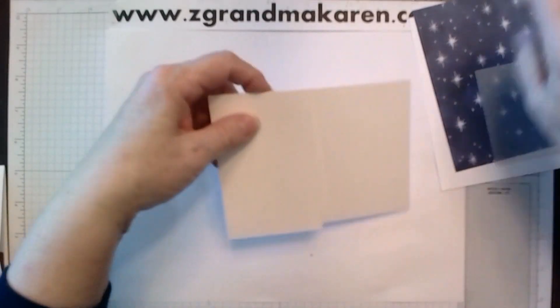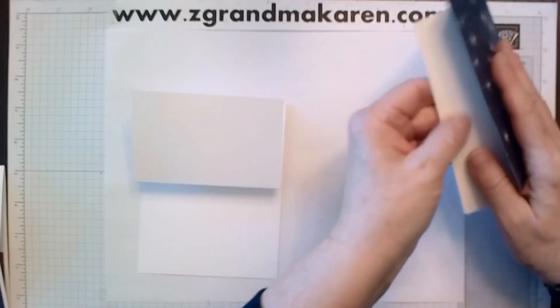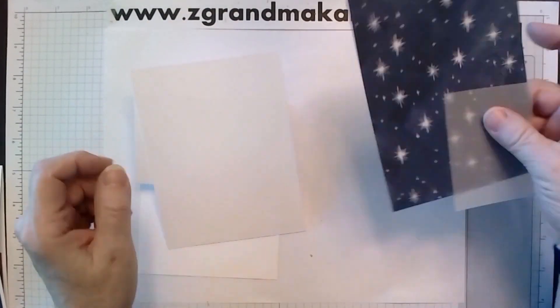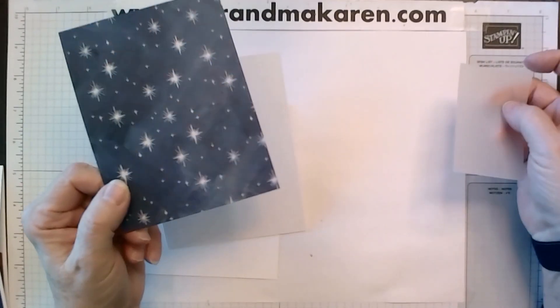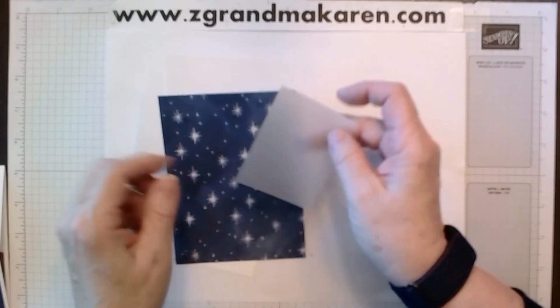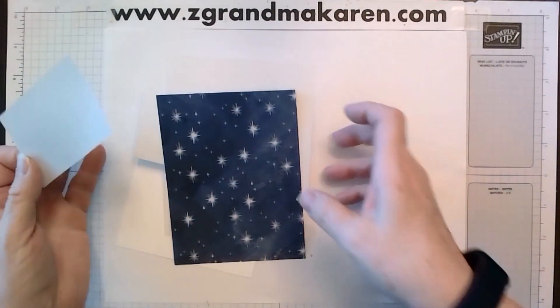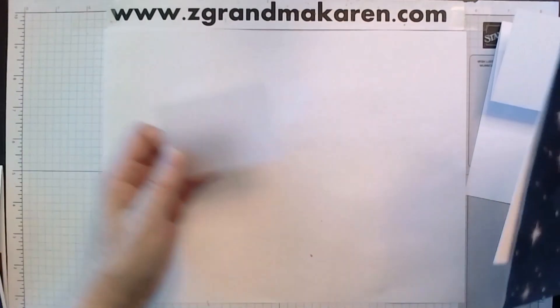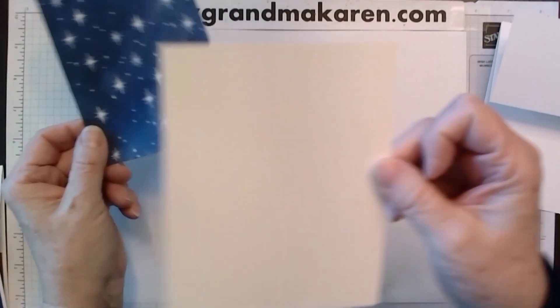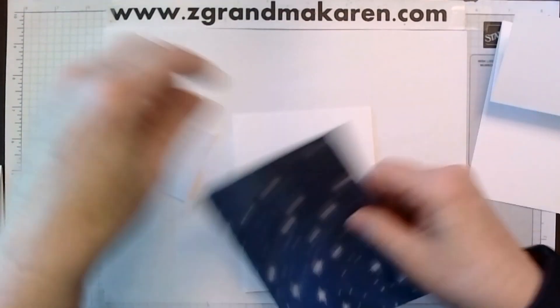And then we also need a four and a quarter by five and a half piece of white. And a piece of four by five and a quarter of the designer paper. And this is like a two by three inch piece of vellum. First, we will need to use our five and a half by four and a quarter and our piece of designer paper.